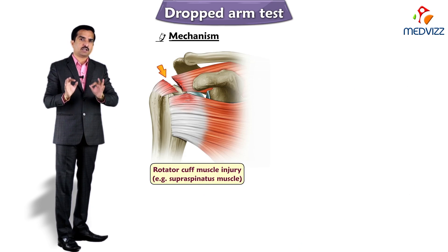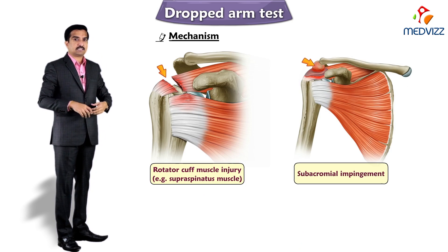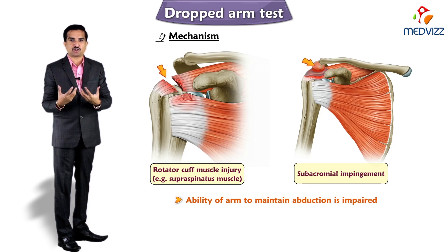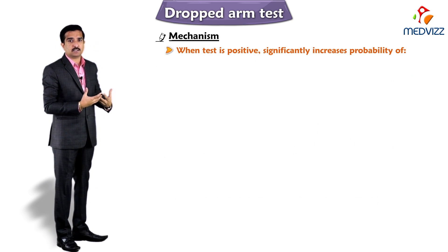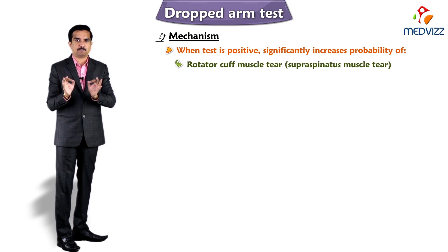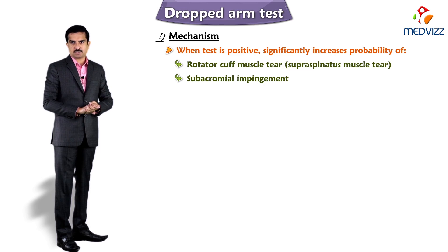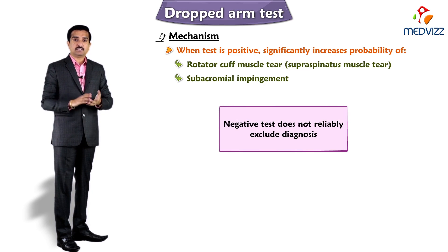Therefore, if there is a rotator cuff tear — for example, a tear in the supraspinatus muscle — or if acromial impingement is present, the ability of the arm to maintain abduction is impaired. A positive test significantly increases the probability of a rotator cuff tear, especially supraspinatus tear or acromial impingement. A negative test, however, does not reliably exclude the diagnosis.